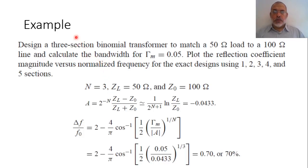In the previous video we studied the basic theory of binomial section or binomial multi-section transformer matching. Now in this video we are going to present an example for designing a binomial multi-section transformer. It is required to design a three section binomial transformer to match a 50 ohm load to 100 ohm line.